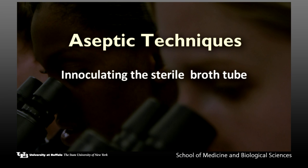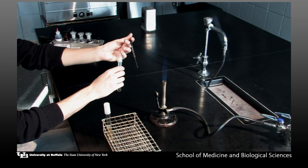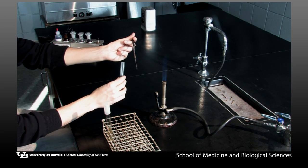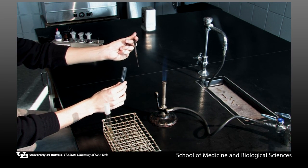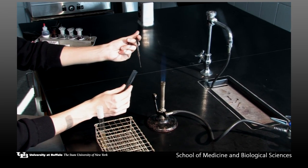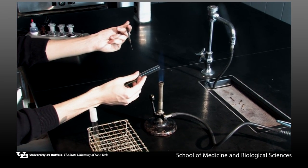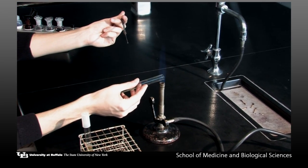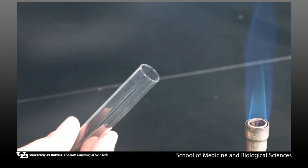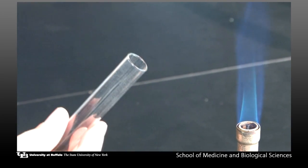Inoculating the sterile broth tube. Remove the cap of the sterile medium with the little finger of your loop hand and hold it there. Flame the mouth of the tube by passing it through the Bunsen burner flame. Hold the open tube at an angle to minimize airborne contamination.